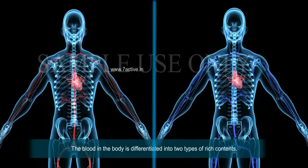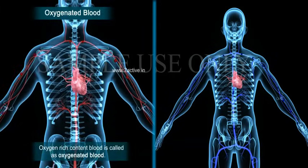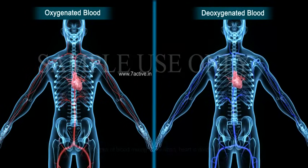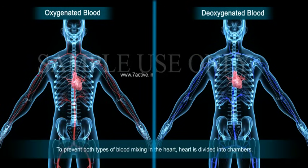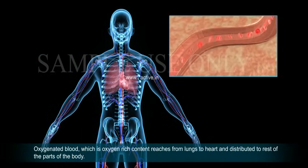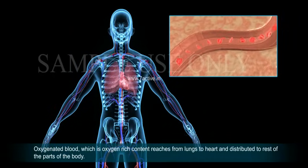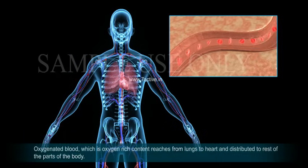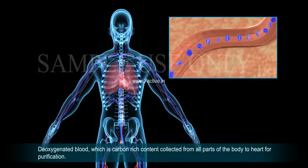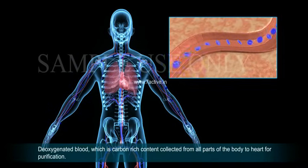Blood in the body is differentiated into two types based on its content. Oxygen-rich blood is called oxygenated blood. Carbon dioxide-rich blood is called deoxygenated blood. To prevent both types of blood from mixing, the heart is divided into chambers. Oxygenated blood reaches from the lungs to the heart and is distributed to the rest of the body. Deoxygenated blood is collected from all parts of the body back to the heart for purification.